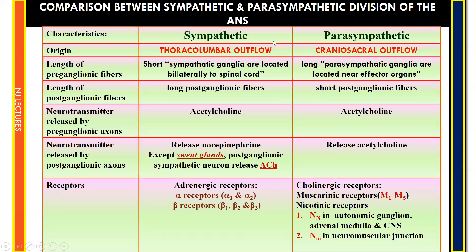The sympathetic nervous system is also called the thoracolumbar outflow, originating from the thoracic region T1 to T12 and lumbar region L1 to L2 of the spinal cord. The parasympathetic nervous system is called the craniosacral outflow, originating from four cranial nerves — the third (oculomotor), seventh (facial), ninth (glossopharyngeal), and tenth (vagus) — and the sacral region S2 to S4 of the spinal cord.